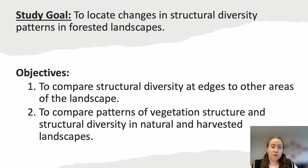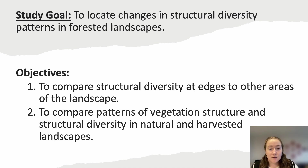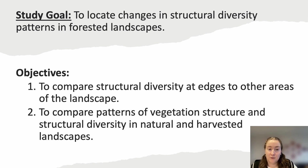The goal of this study is to locate changes in structural diversity patterns in forested landscapes. I have two primary objectives. The first is to compare structural diversity at edges to other areas of the landscape — asking questions such as: are there distinct boundaries or gradual transitions across the landscape? We hypothesize that there will be higher structural diversity at edges, as they contain vegetation from patches on either side of the edge. The second objective is to compare patterns of vegetation structure and structural diversity in natural and harvested landscapes by comparing the number of distinct boundaries in each area.